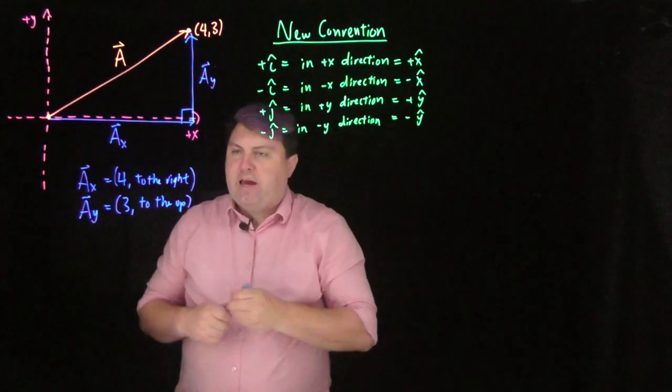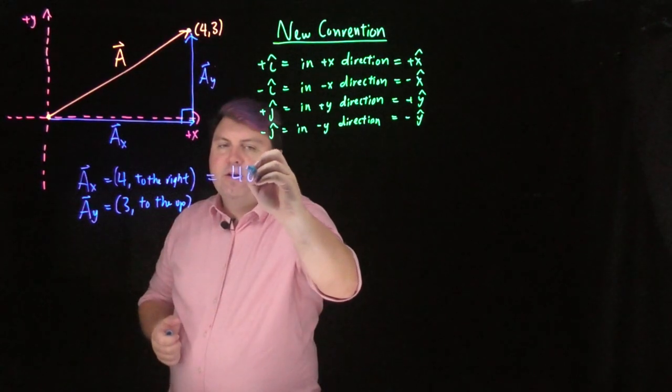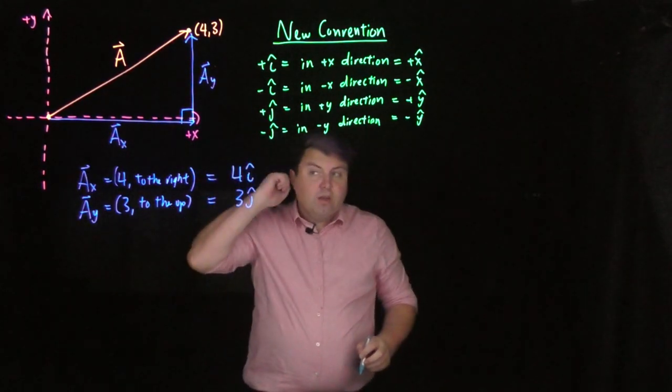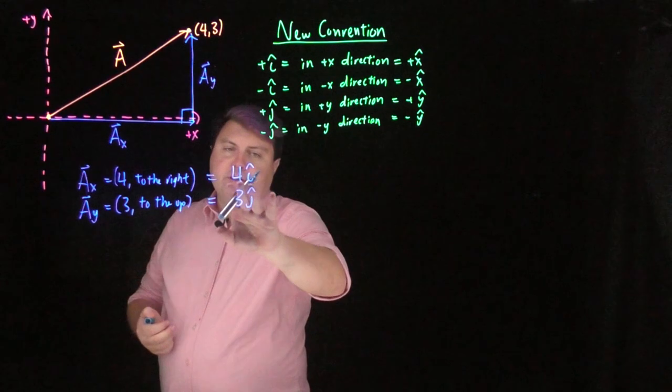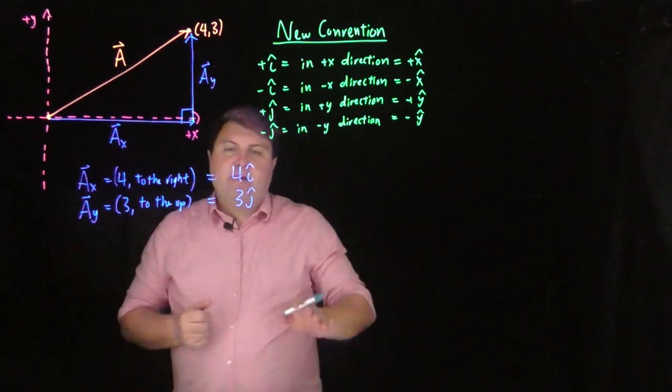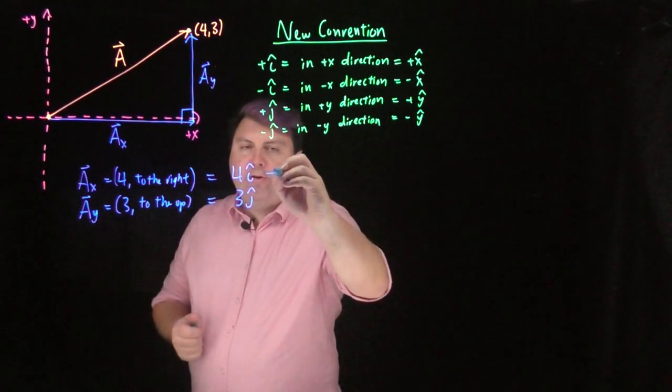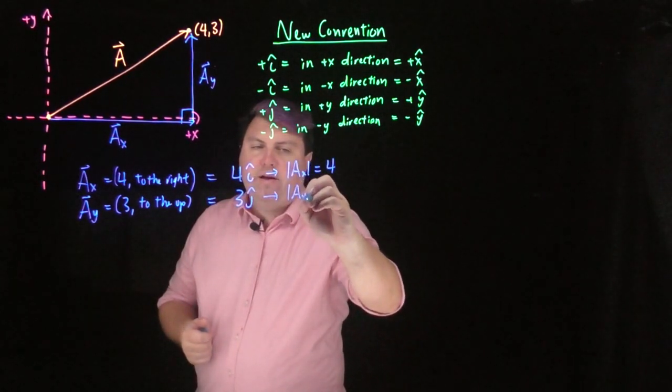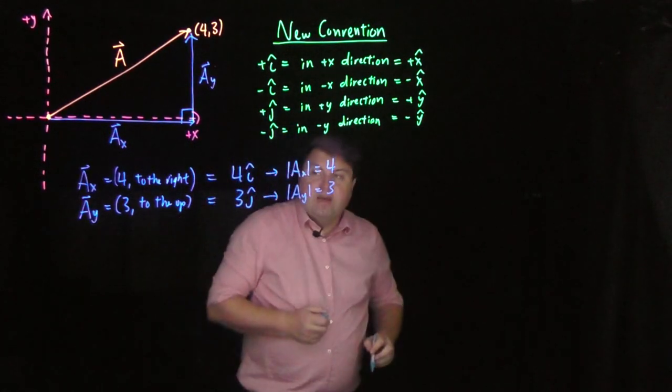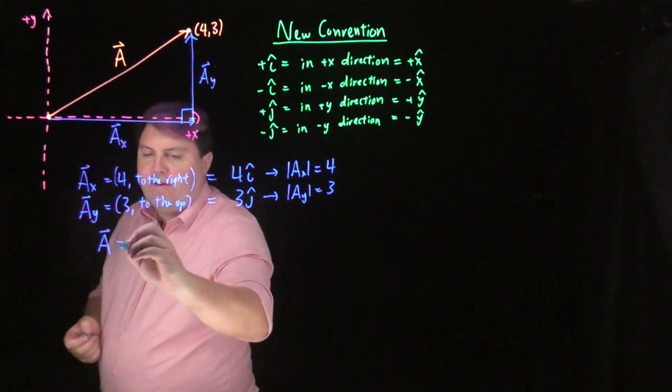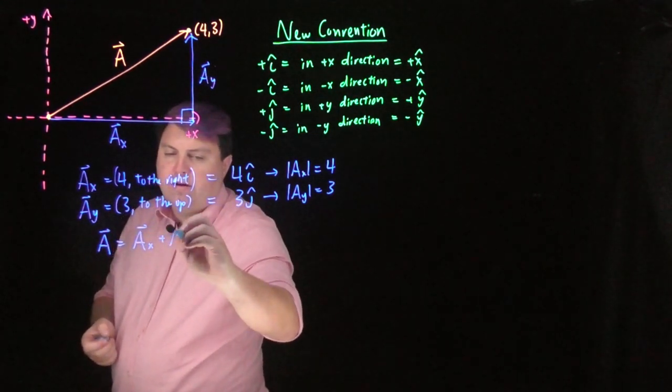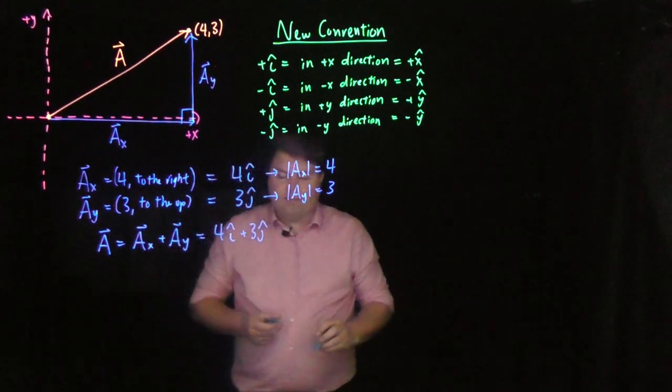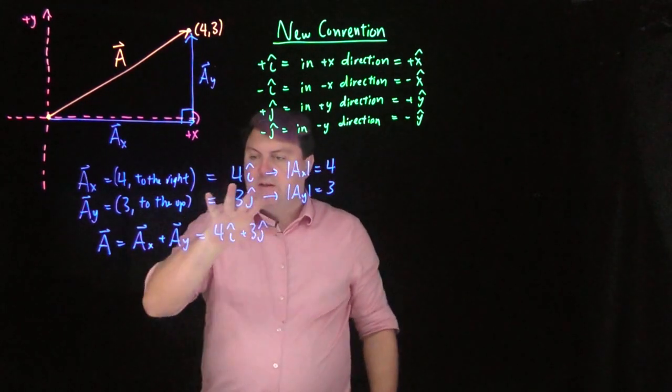So this new convention means that my ax vector could just be written as 4i-hat, and my ay vector could be just written as 3j-hat. What's cool about this is that now I can treat this like a mathematical algebraic variable, and I am multiplying it by a magnitude. We can see pretty quickly that the magnitude of ax is 4, the magnitude of ay is 3. And then we can say that my a vector is equal to ax vector plus ay vector. So I can write it as 4i-hat plus 3j-hat. This is looking great.